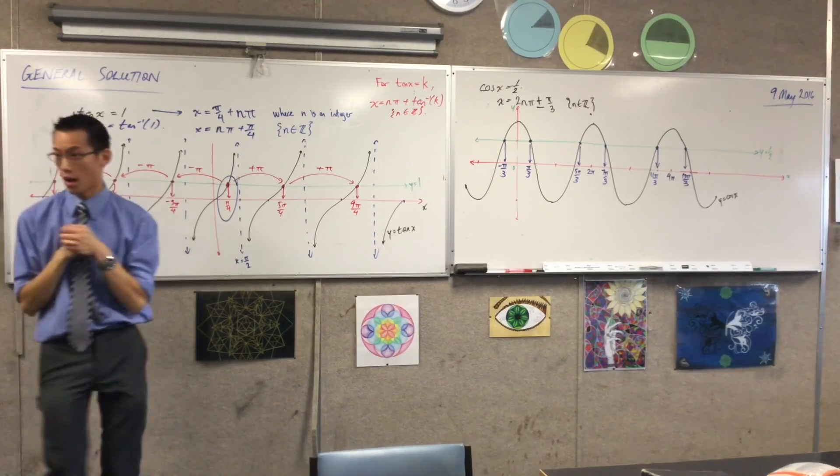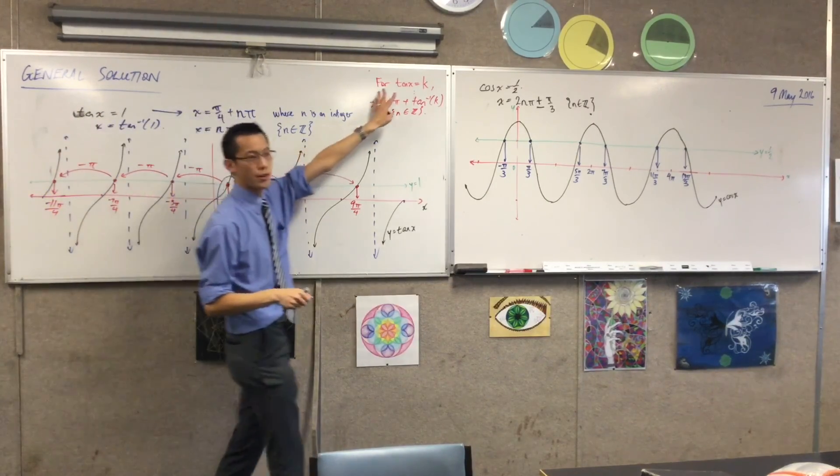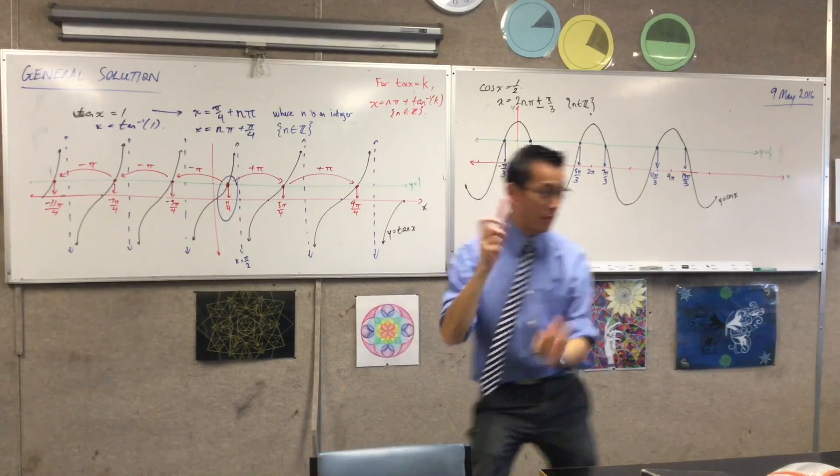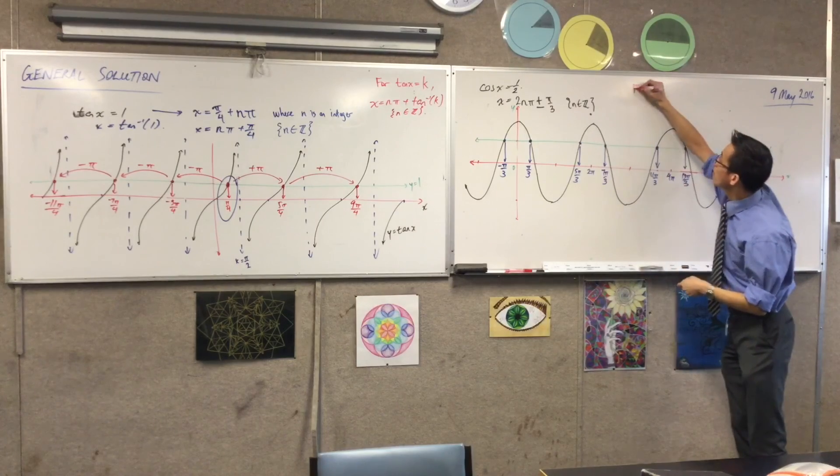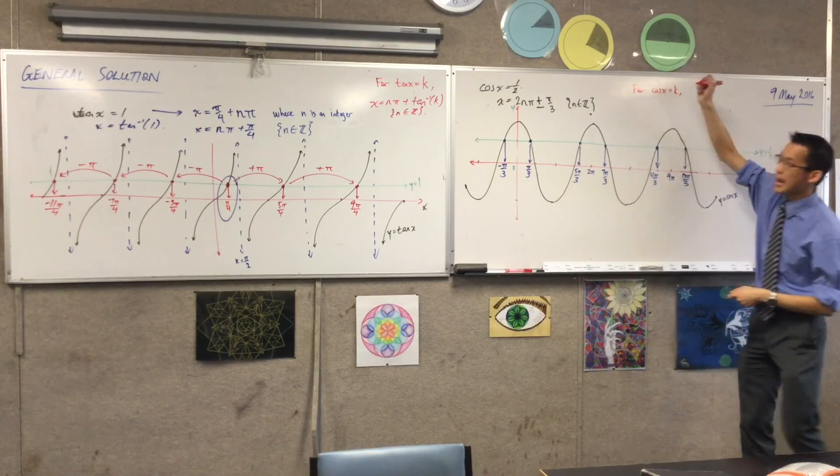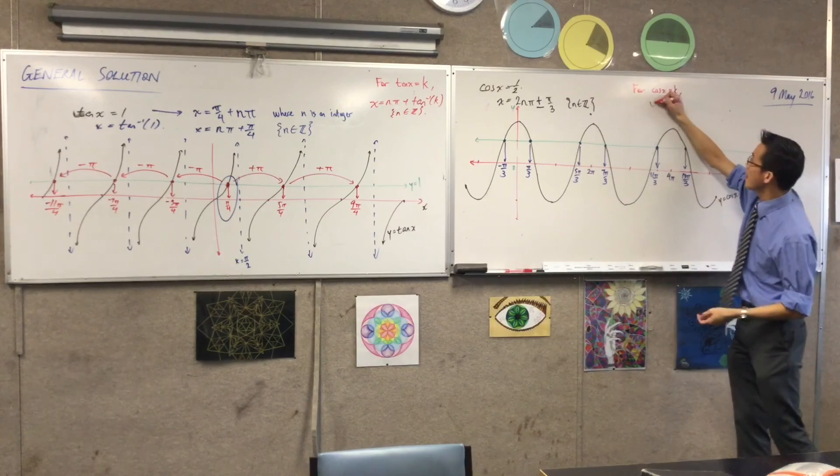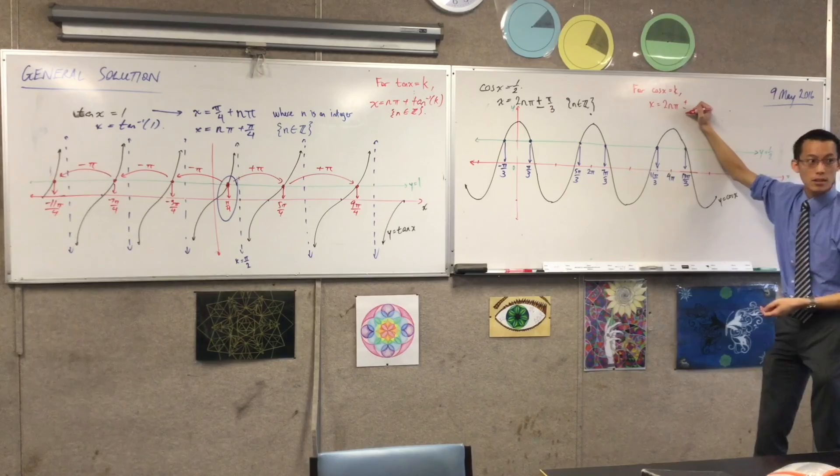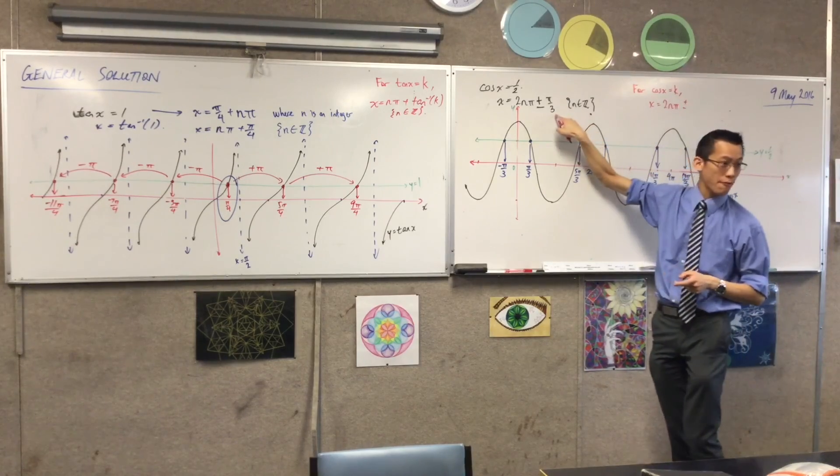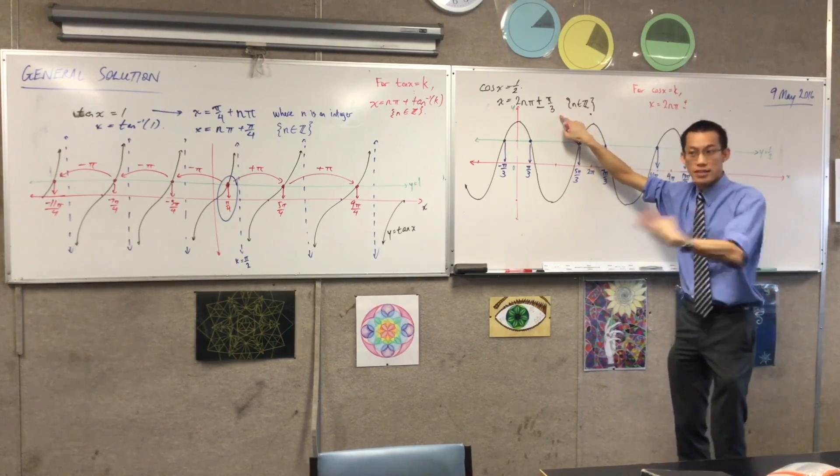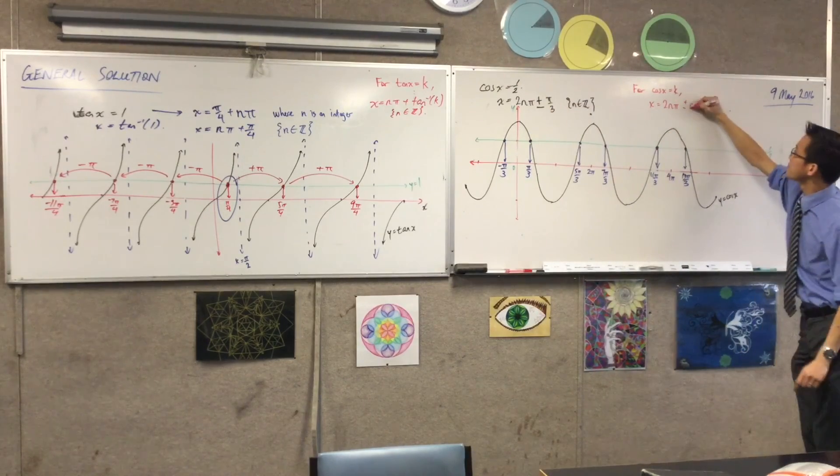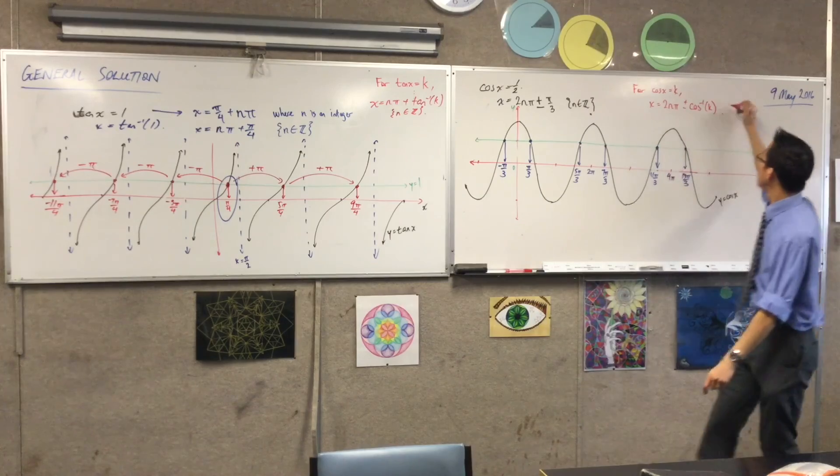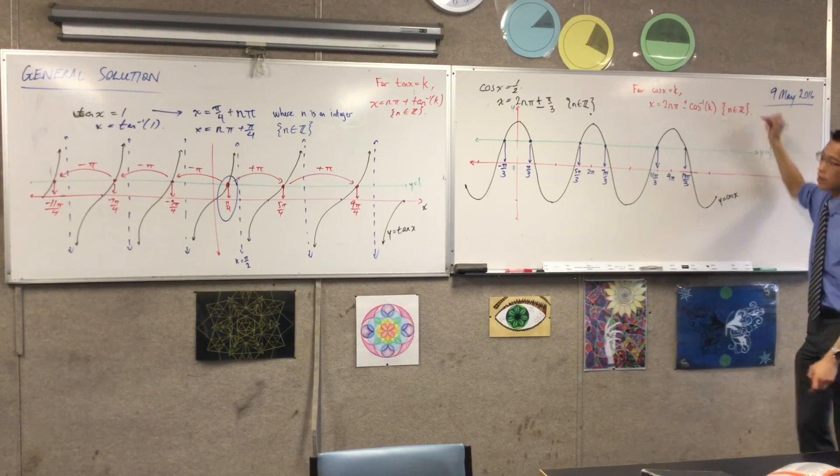So, therefore, that was for cos x equals 1/2, right? What about for cos x equals anything? If I said, okay, again, get ready to draw a box. For cos x equals k, I'm going to say x is equal to 2nπ plus or minus cos inverse k. That's where this π/3 came from. π/3 is cos inverse of 1/2.